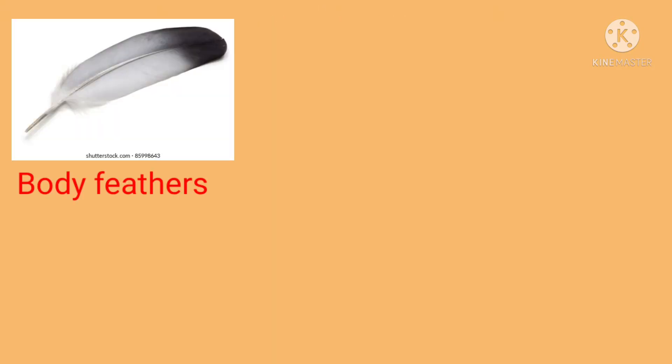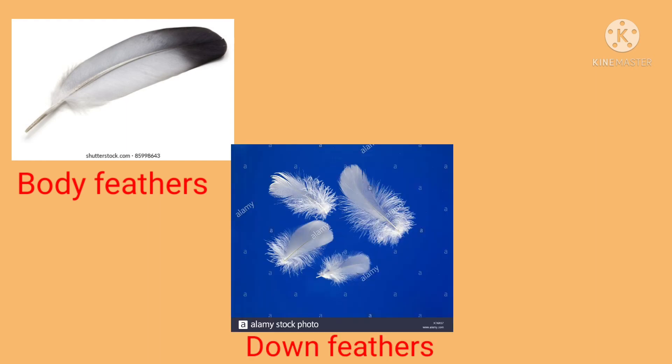First, body feathers. These feathers are found all over the bird's body. They give shape to the bird's body. Second, down feathers. These feathers grow close to the skin. They are short, soft and fluffy and keep the bird's body warm.